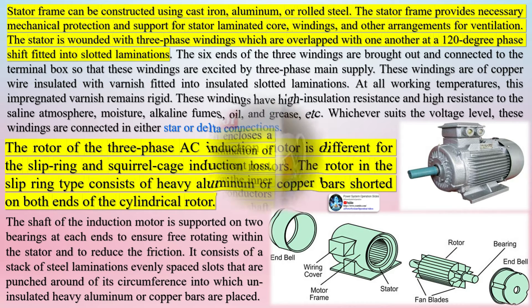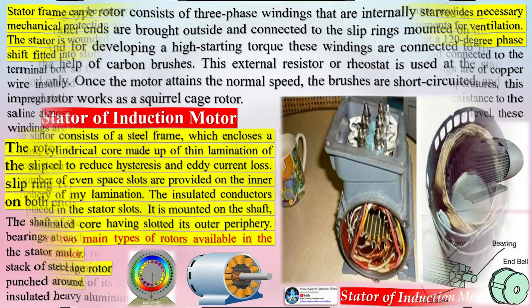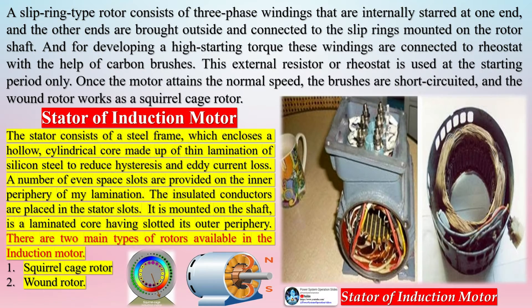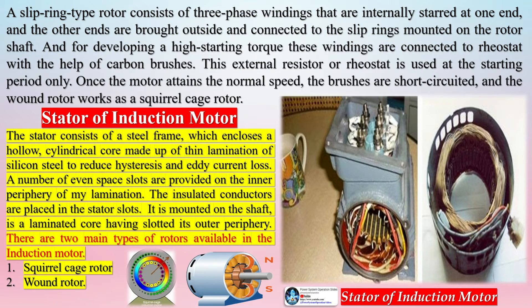For developing high starting torque, these windings are connected to a rheostat with the help of carbon brushes. This external resistor or rheostat is used at the starting period only. Once the motor reaches normal speed, the brushes are short-circuited and the wound rotor works as a squirrel cage rotor.